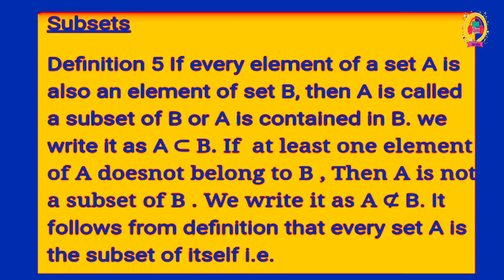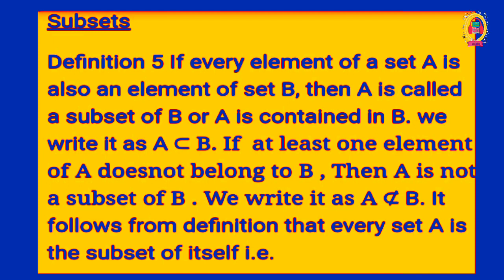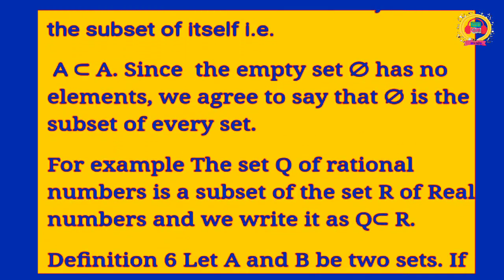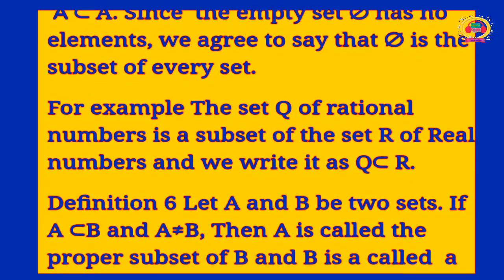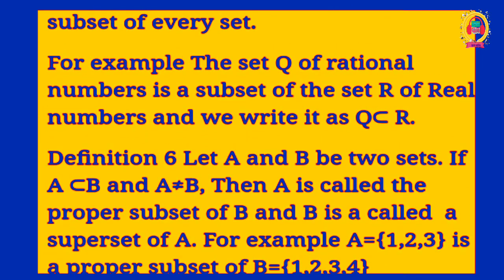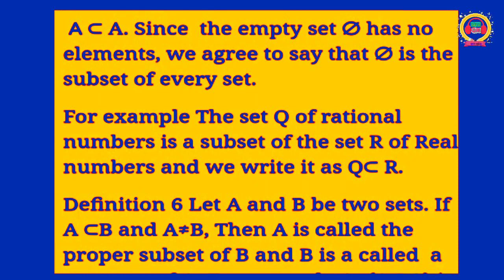Subset: A is a subset of B. For example, if B = {m, 2, ...}, then A is a subset of B. If A and B have a different number of elements, we write A as a proper subset of B. If A equals B, that is an improper subset.